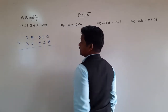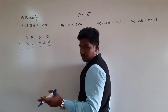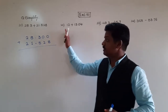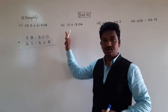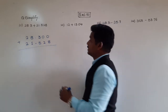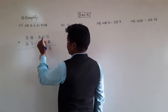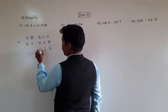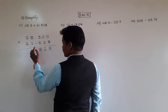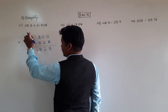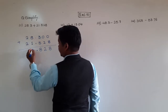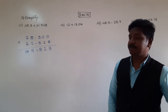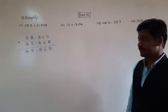Now we start from the rightmost digit. 0 plus 8 is 8. 0 plus 2 is 2. 3 plus 5 is 8. Then put the decimal point. 8 plus 1 is 9. And 2 plus 2 is 4. The answer is 49.828.